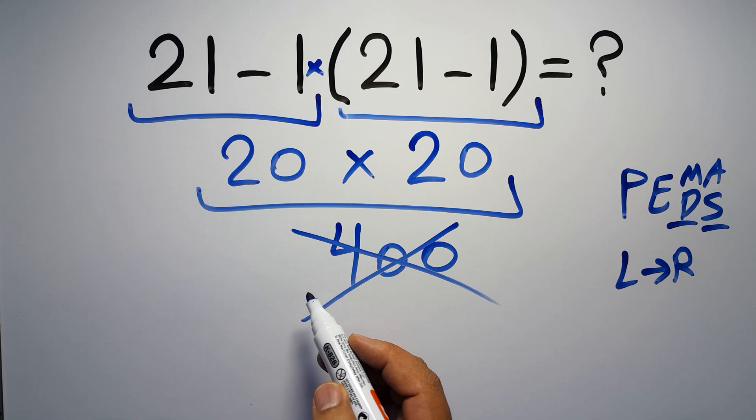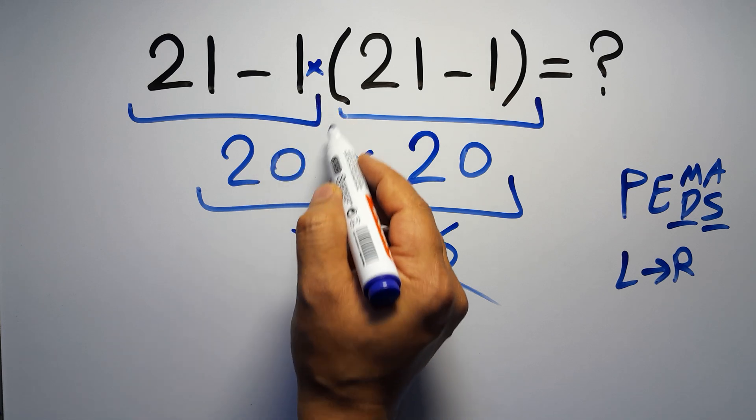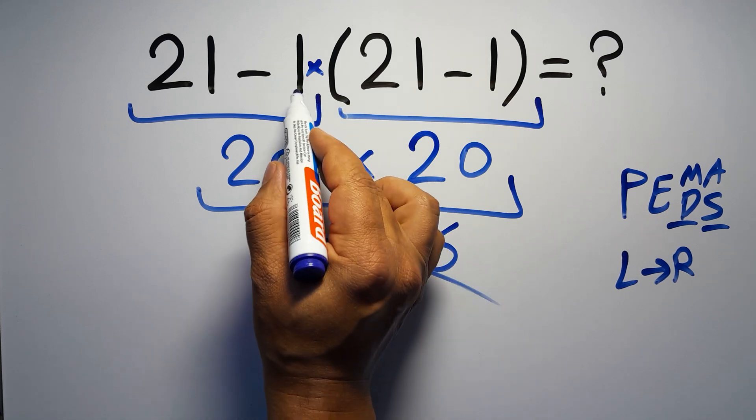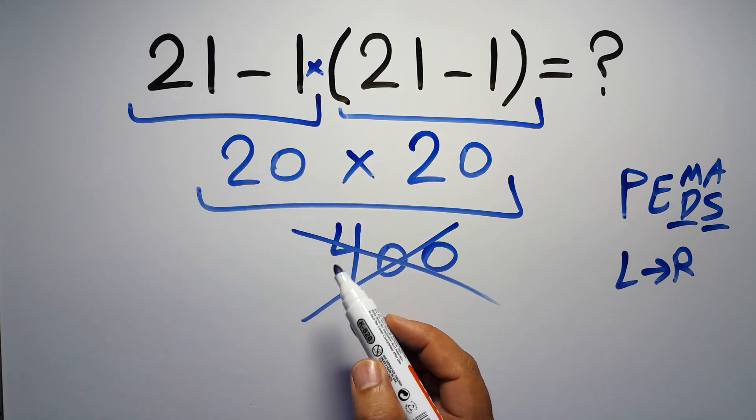Here we have a multiplication, because in mathematics when a number is placed next to parentheses it means multiplication, and we usually don't write the multiplication sign for brevity.